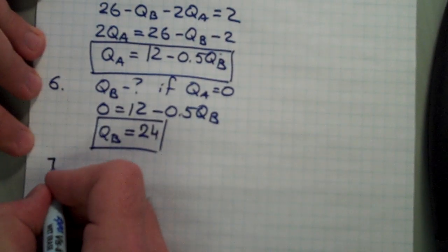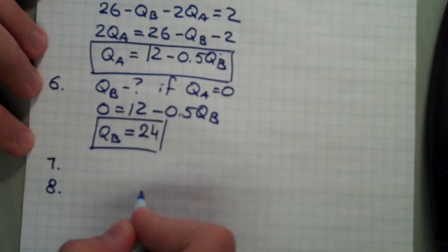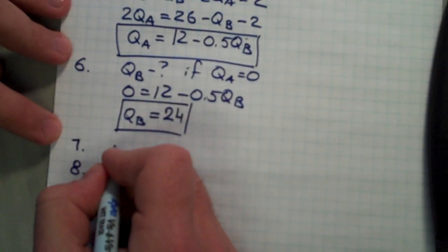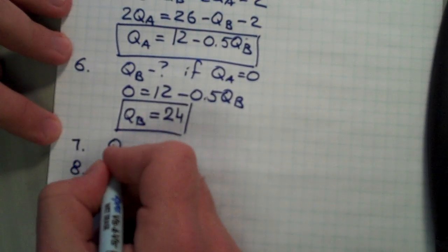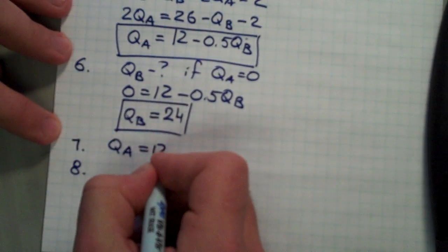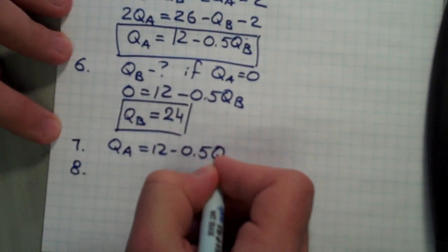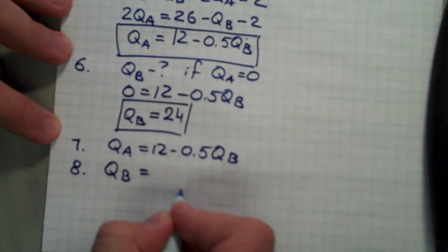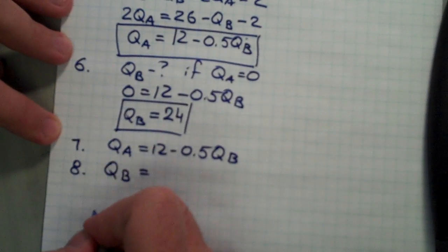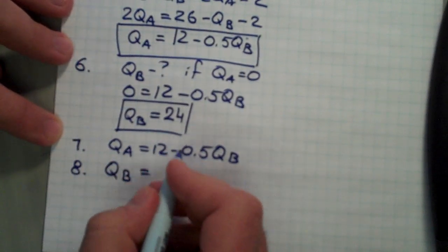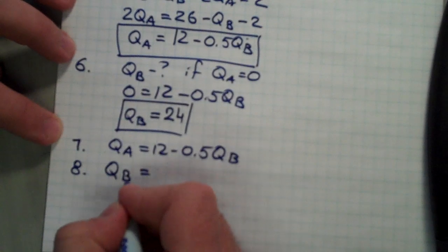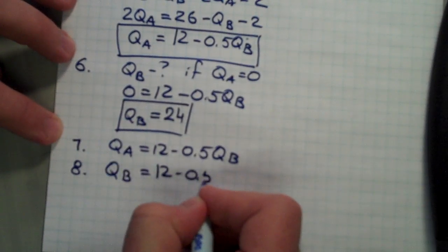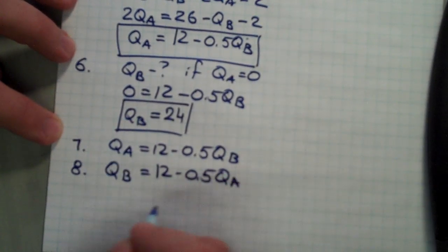Questions seven and eight ask you to write the reaction function of both firms. Firm A's reaction function, as we already know, is QA equals 12 minus 0.5QB. Since the firms are identical, we don't need to go through the full solution procedure — firm B's reaction function is given by the identical formula: QB equals 12 minus 0.5QA.